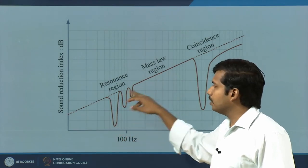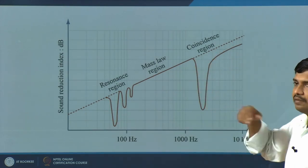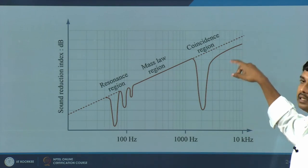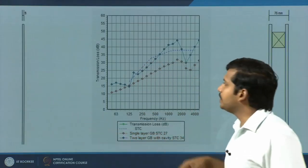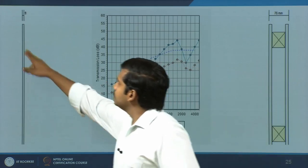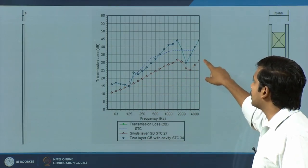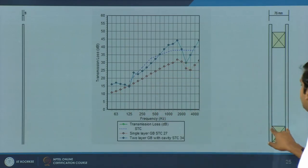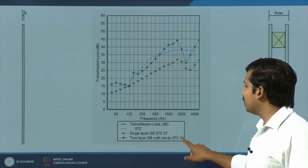On the higher end is the coincidence region, where different planes of the acoustic signal coincide with each other and again the insulation property drastically drops down. For example, with a single 13 to 15 mm gypsum panel, you get a certain sound transmission class curve. Now if you add a cavity and use two gypsum boards, you are able to increase STC from 27 to 34.